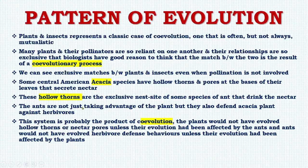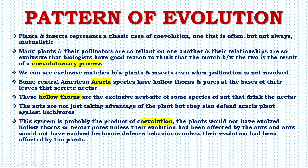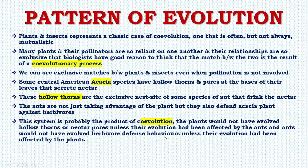The ants are not just taking advantage of the plants — they also defend the acacia plant against herbivores. This system is probably the product of co-evolution. The plants would not have evolved hollow thorns or nectar pores unless their evolution had been affected by the ants, and the ants would not have evolved herbivore defense behaviors unless their evolution had been affected by the plants.